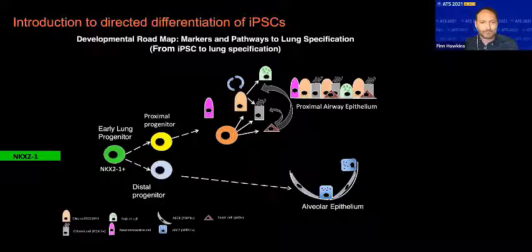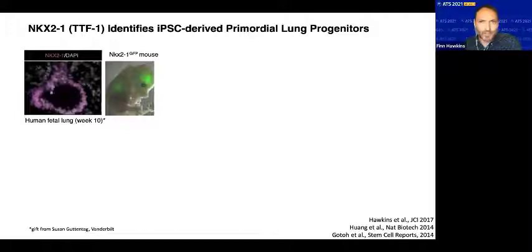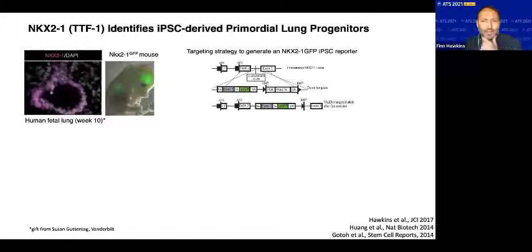I'm going to briefly review some published work to describe how we ultimately achieved lung differentiation. In a human lung at week 10, NKX2-1 is also expressed very early during human fetal lung development. To identify lung progenitors from iPSC cells, we took a similar approach and, using an iPSC line, we used CRISPR and gene editing technology to insert a green fluorescent protein sequence into the NKX2-1 locus without interfering with transcription or translation of NKX2-1.